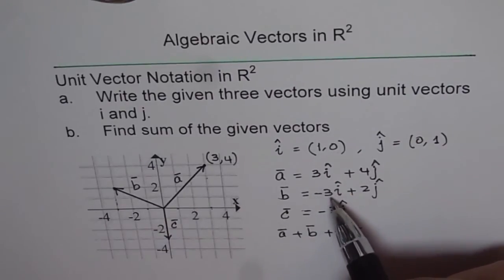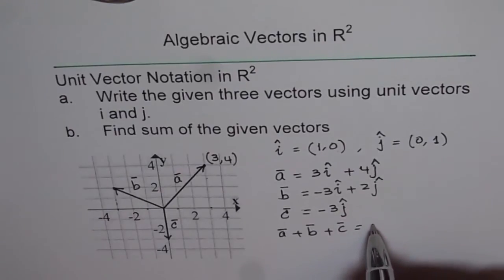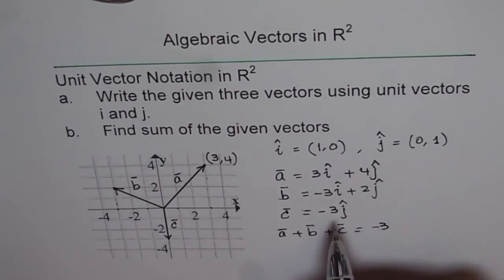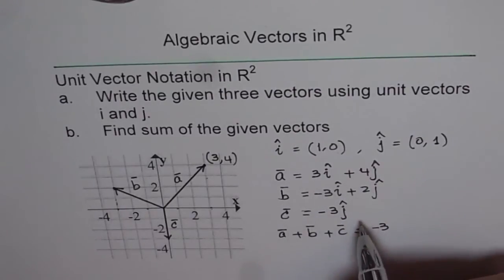So when you add 3 minus 3, you get 0. And for j component, 4 plus 2 minus 3. Sorry, this is for j component. I should have written 0 here and j there. So that would be better.